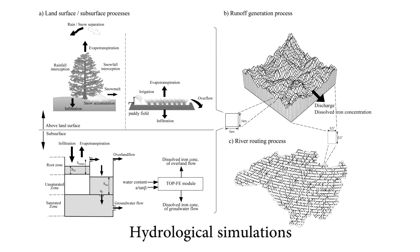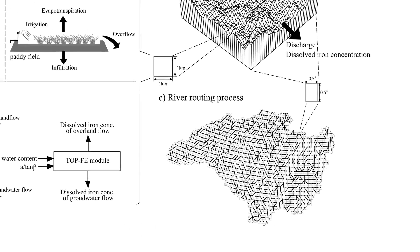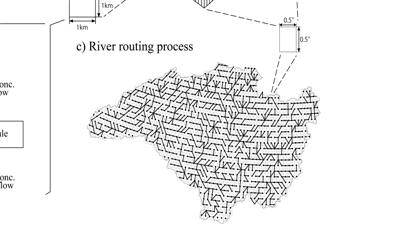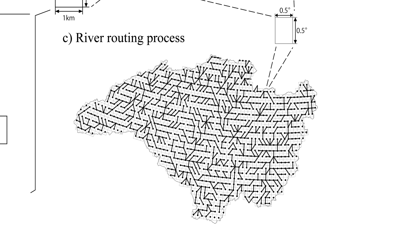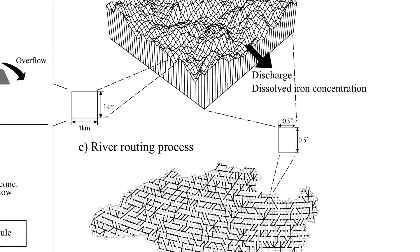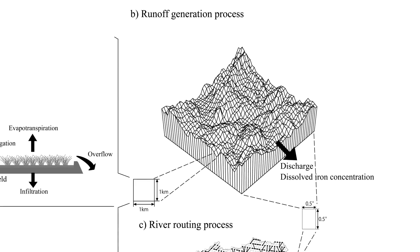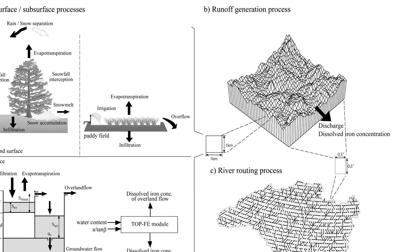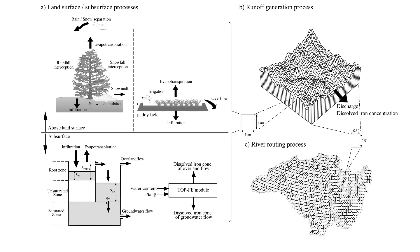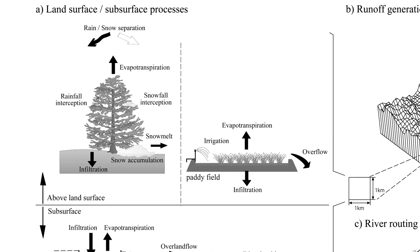Hydrological simulations are very useful and powerful tools. The whole watershed is subdivided into several parts and the river routing process is simulated. If you look at each sub-watershed, it is composed of more detailed hydrological process simulations. On the left-hand side of the figure, you can see the detail of the hydrological processes that are simulated.